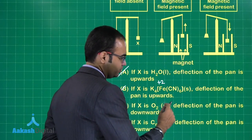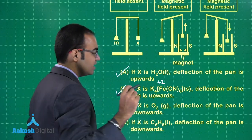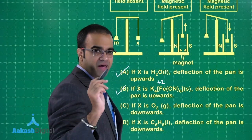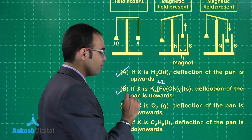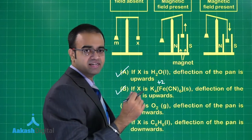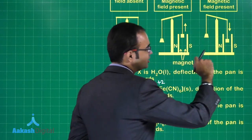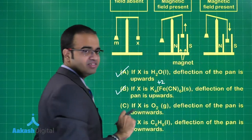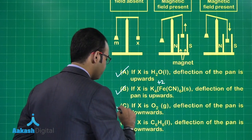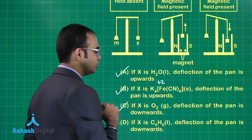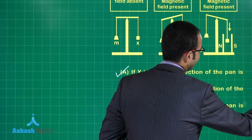If X is O₂, deflection of the pan is downwards. O₂ is paramagnetic, so it will be attracted towards the magnetic field. Option C is also correct.